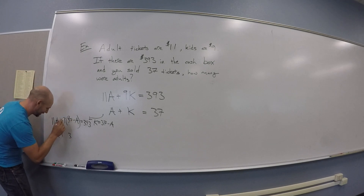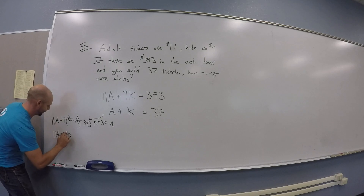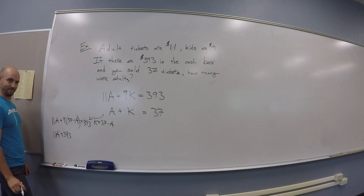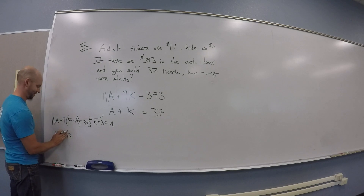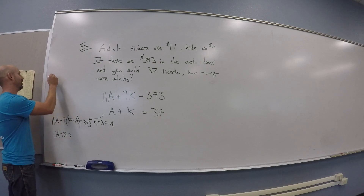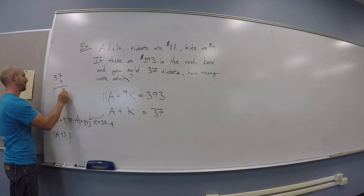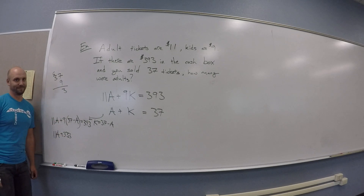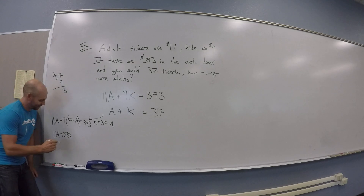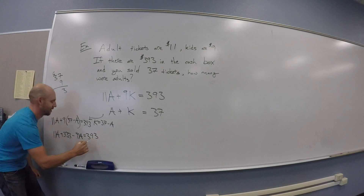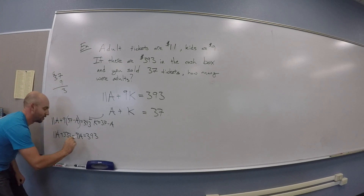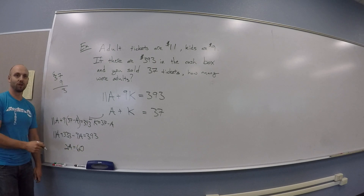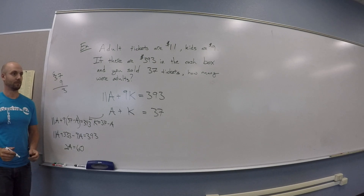We're happy to be 333. Okay, it is whatever it is. Minus 9a equals 393. Then you have 2a plus 333, so you could subtract. So you get 2a equals 60. So a equals 30 from that method. That's cool.